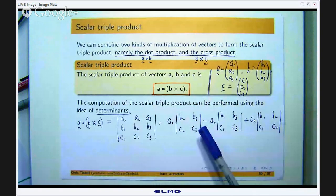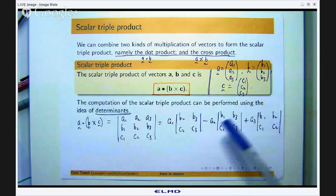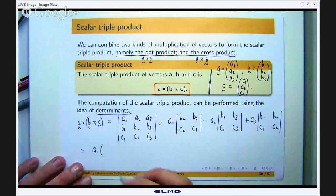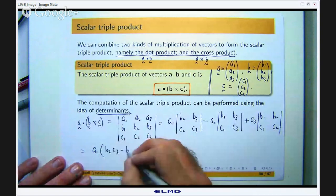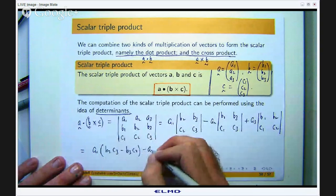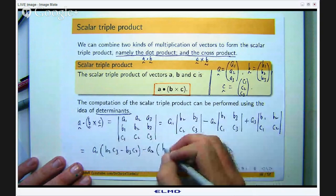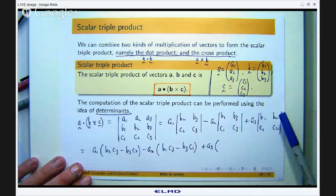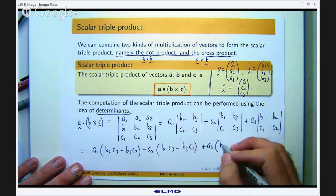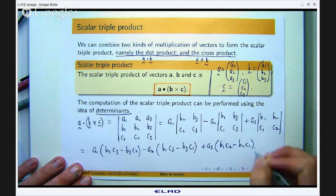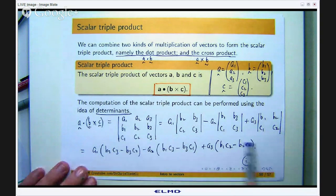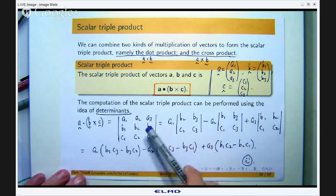Now remember with these 2 by 2 determinants you work in a diagonal manner. That times that minus that times that. So you can just write this out now. So it is a1 times b2c3 minus b3c2 minus a2 times b1c3 minus b3c1 plus a3 times b1c2 minus b2c1. That is it. Okay, our answer is a number, it is a scalar. Now this is way too much to remember for me, but I can easily derive it just using a determinant. That is why I like to do it.